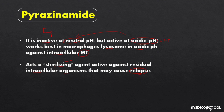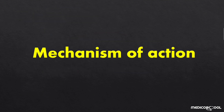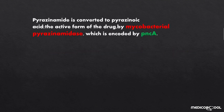Regarding the mechanism of action: when pyrazinamide enters Mycobacterium tuberculosis, it is first converted into pyrazinoic acid, which is the active form of the drug. This conversion is done mainly by mycobacterial pyrazinamidase, which is encoded by a gene known as PNCA.